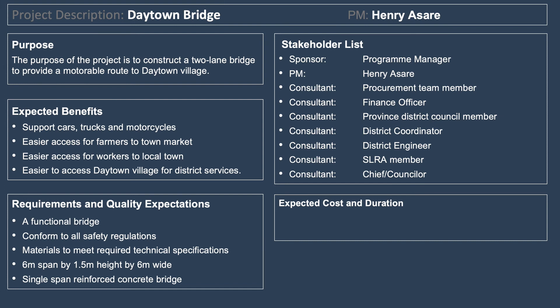For cost and timeline: the estimated budget is $42,000 USD with a contingency of plus or minus five percent. The project is expected to take a maximum of 12 months, with the actual goal being around 10 months. That completes the project description, which gives a very good direction for the project.